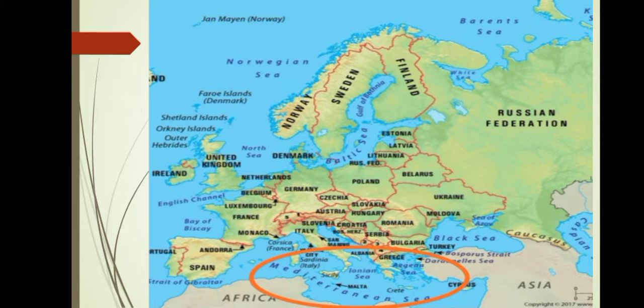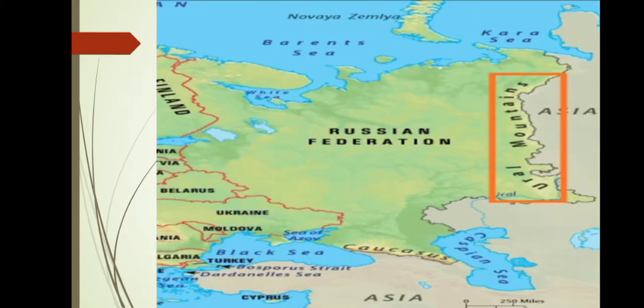Children, can you identify the mountains towards the eastern side? Yes, these are the Ural Mountains. These mountains form the eastern boundary of Europe.